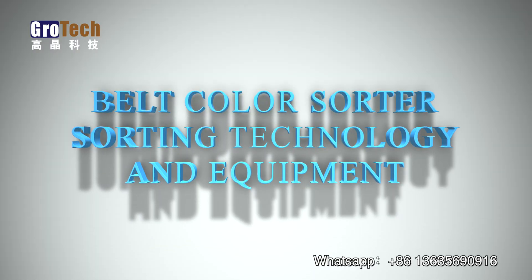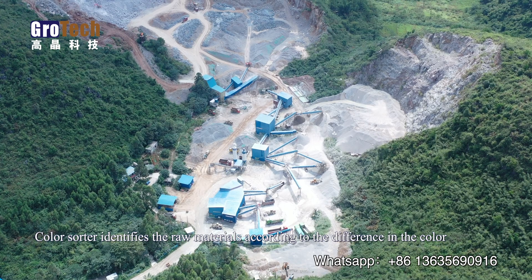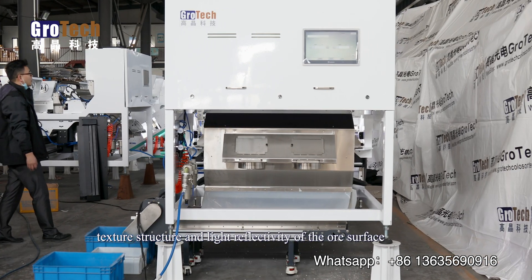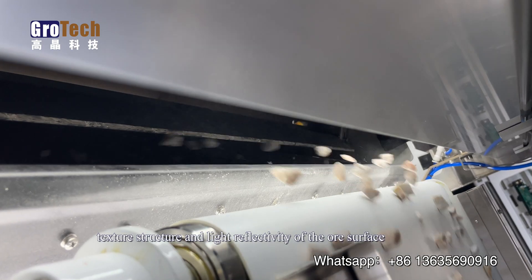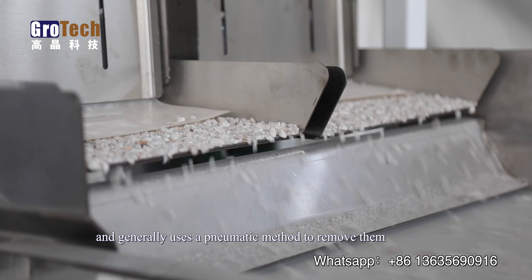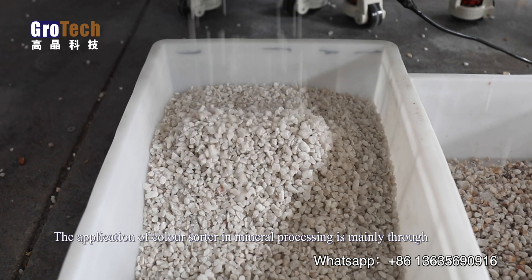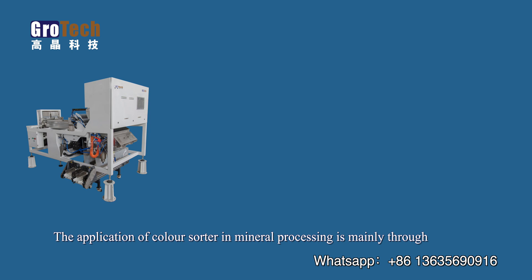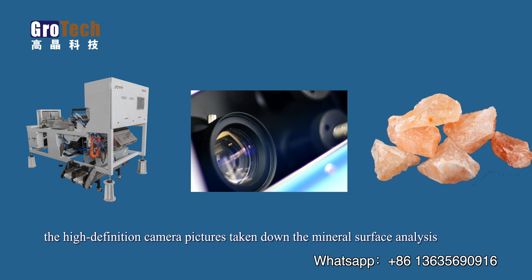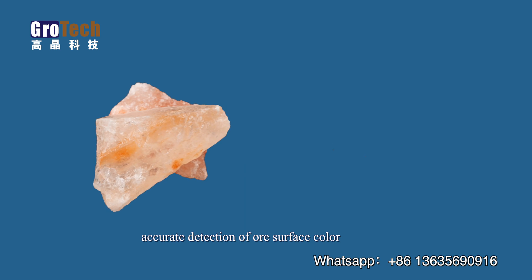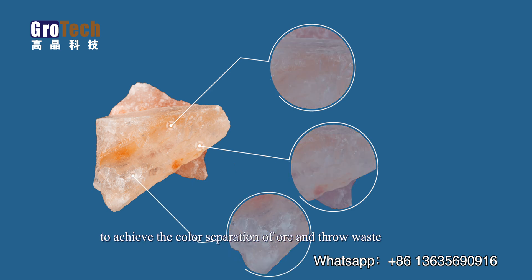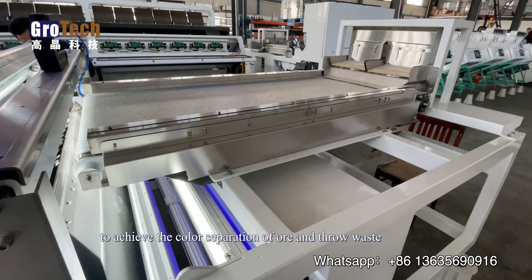Color sorter sorting technology and equipment identifies raw materials according to differences in color, texture, structure, and light reflectivity of the whole surface, and generally uses a pneumatic method to remove them. The application of color sorter in mineral processing is mainly through high-definition camera pictures, taking down the mineral surface analysis and accurately detecting all surface color, luster, and texture differences to achieve the color separation of ore and soil waste.